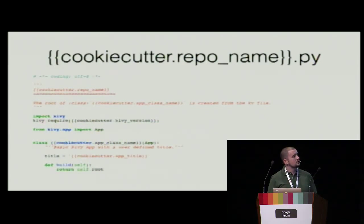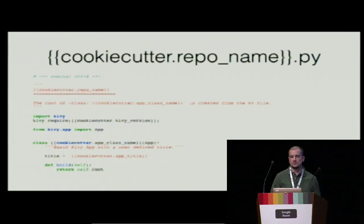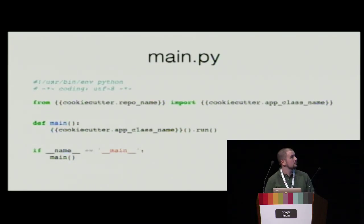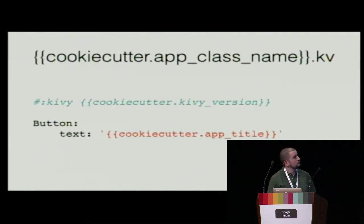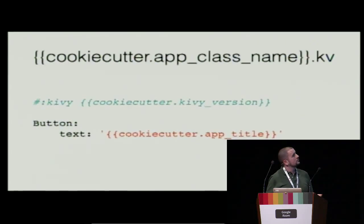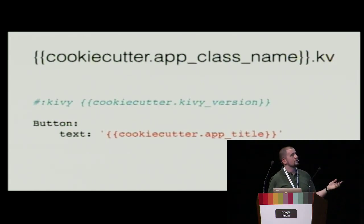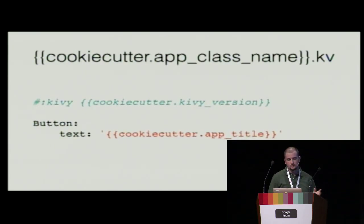This is actually one of the main features of Cookiecutter — you can use it for every programming language or markup format you can think of, as long as it's readable as text. The Kivy file also requires you to specify the version, and this is like a root element where I want to have a button and a text, and the button text should be the application title. It's optional — you can also do it in source code, just as you prefer.